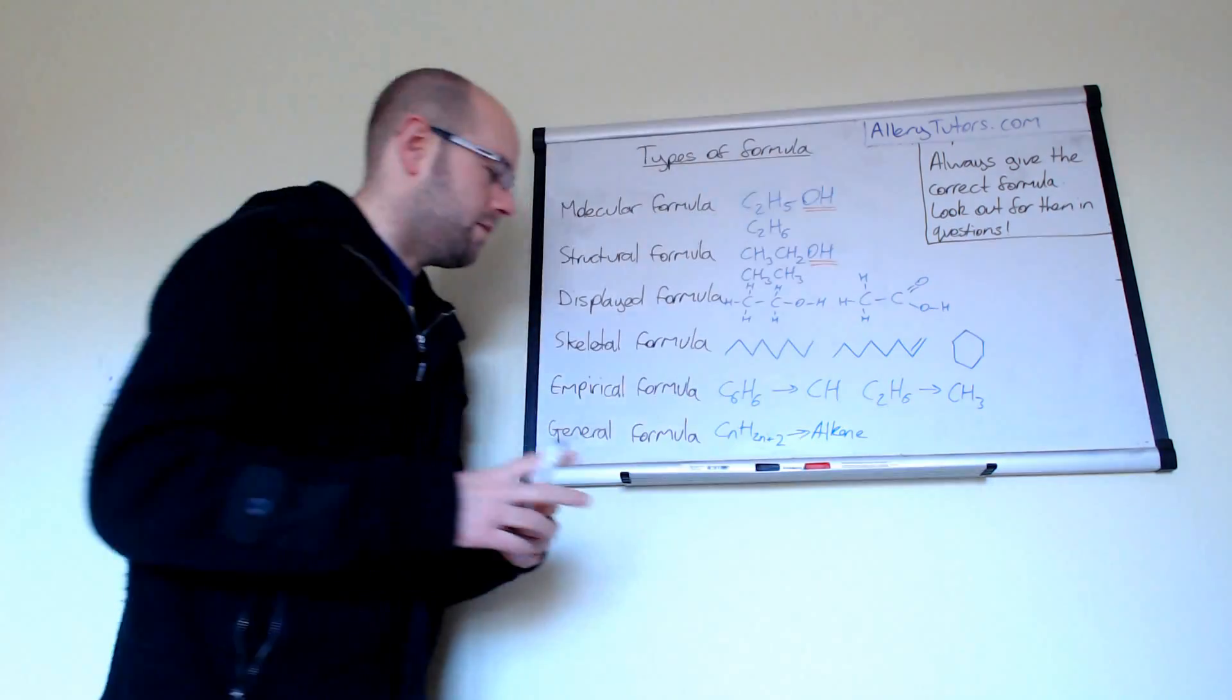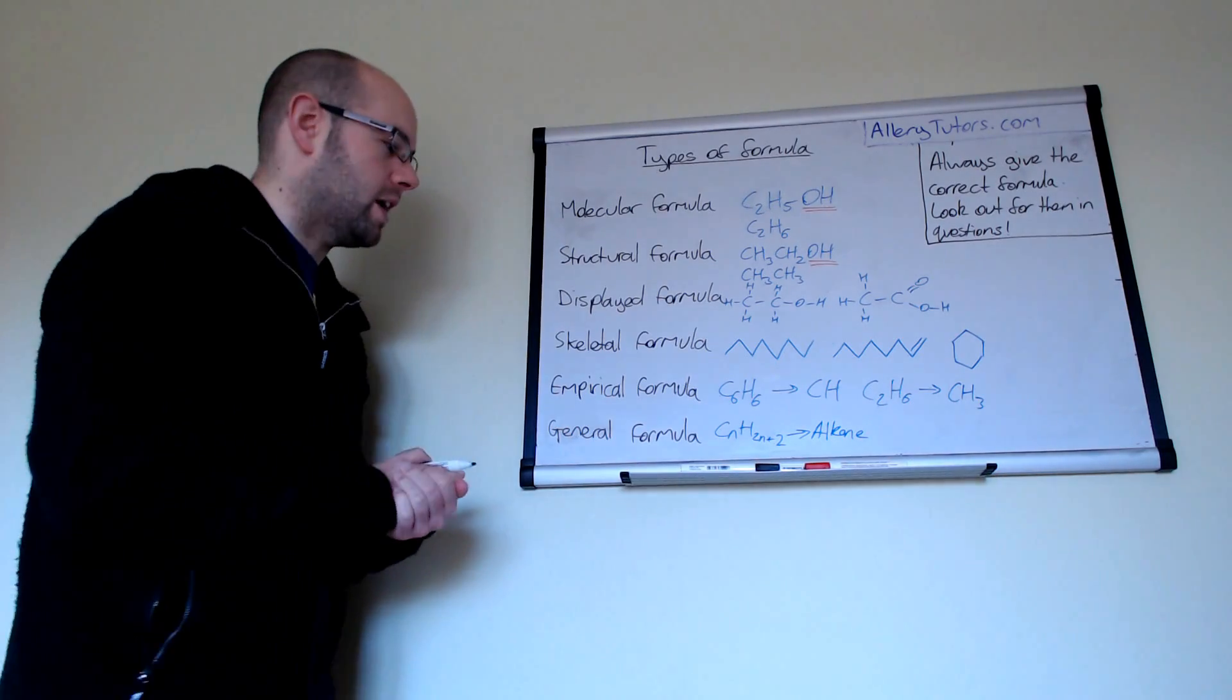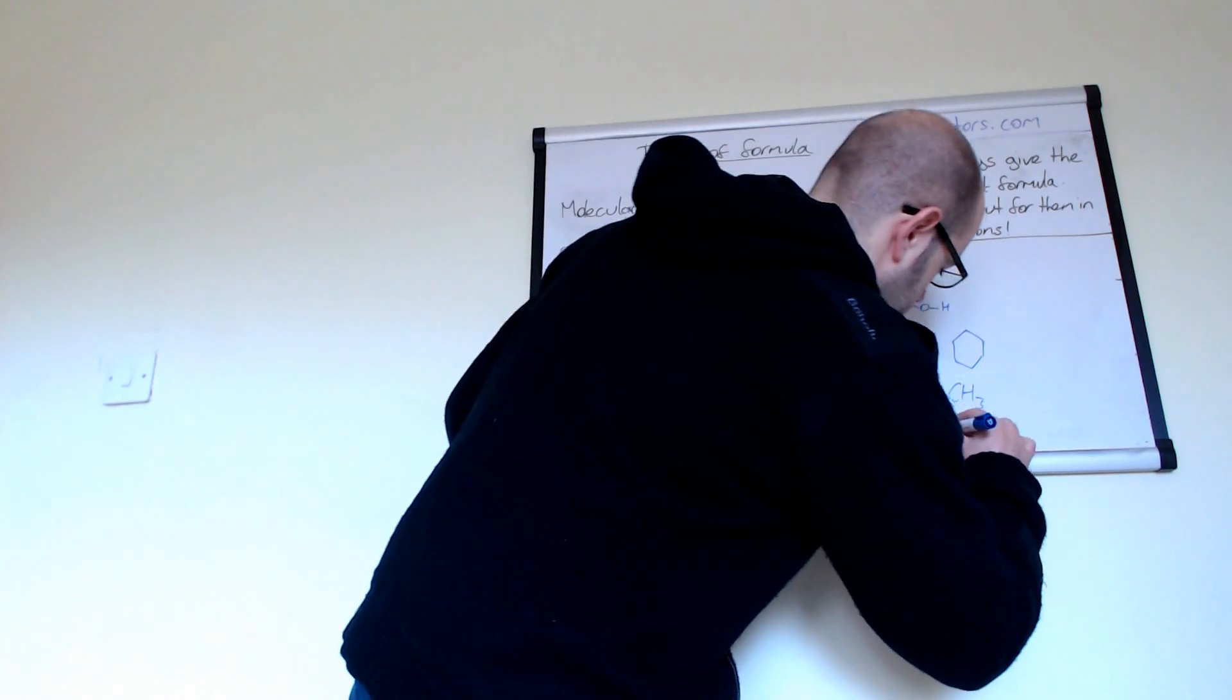You can also do it for an alkene as well. Alkenes obviously have two less hydrogens in the molecule compared to alkanes so that's going to be CnH2n and that would be for an alkene.